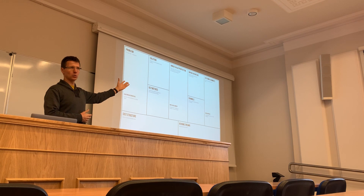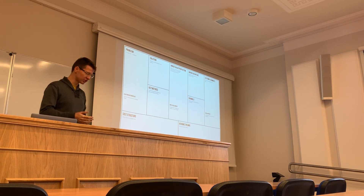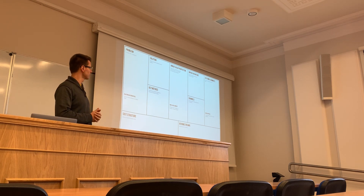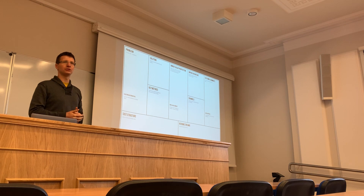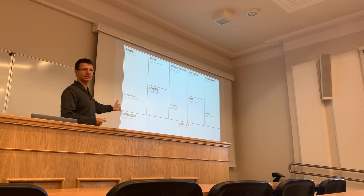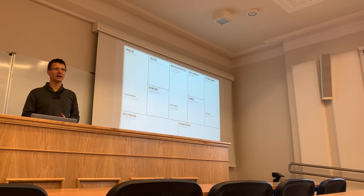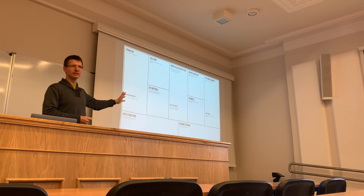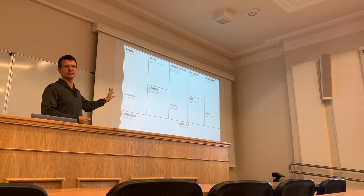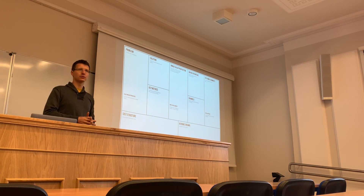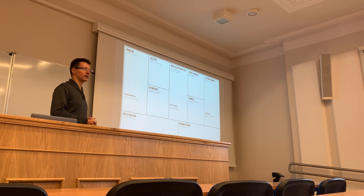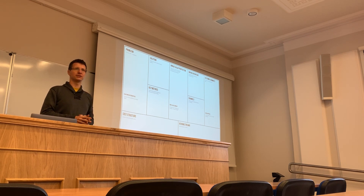Then things like unfair advantage — why you and your team are uniquely positioned to do that — what customer segments you're serving, what channels you'll use to reach them, what key metrics will measure your success, and also what the main costs and revenue streams will be. Some of you might find this useful. Feel free to use it. If you Google Lean Canvas, you'll find dozens of templates online — some you can print and fill in by hand, and others are digital services.